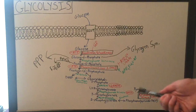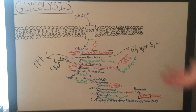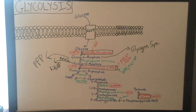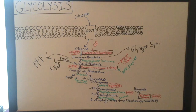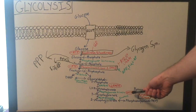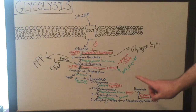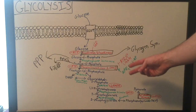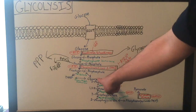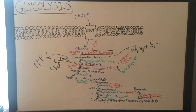Once the cell gets 1,3-bisphosphoglycerate, it'll be converted into 3-phosphoglycerate via the enzyme phosphoglycerate kinase. This is where the cell starts to actually recuperate some of its losses — it'll actually attain 1 ATP per 3-phosphoglycerate that it produces. But since there'll actually be 2 glyceraldehyde 3-phosphates going through this reaction, there'll actually be 2 ATP being produced.